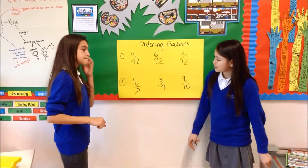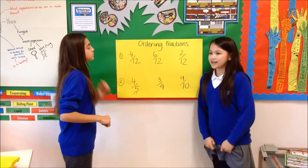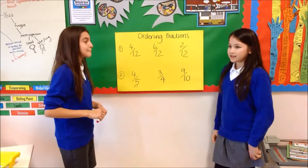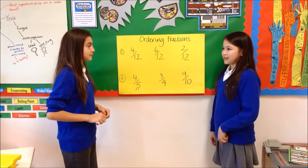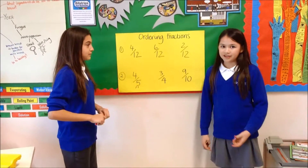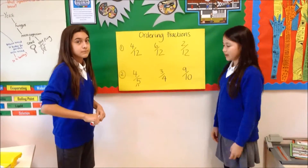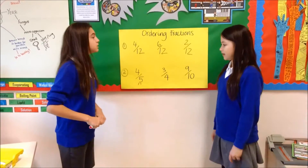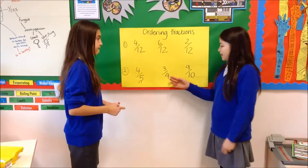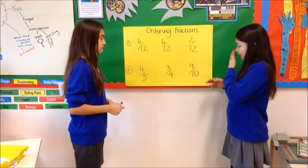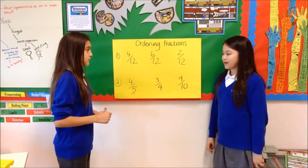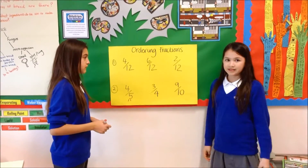So the second one is different, but the denominators are harder, and they are all different. So here, for the denominators, we need to write out the times tables.